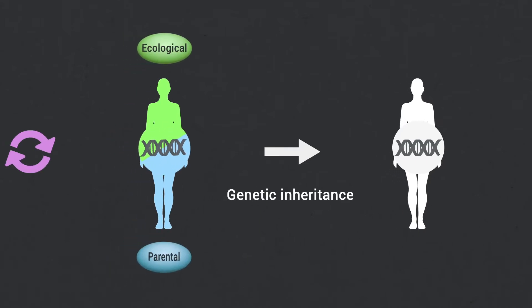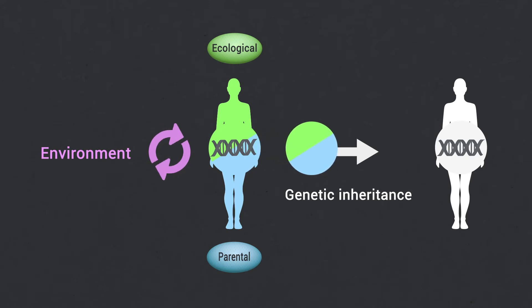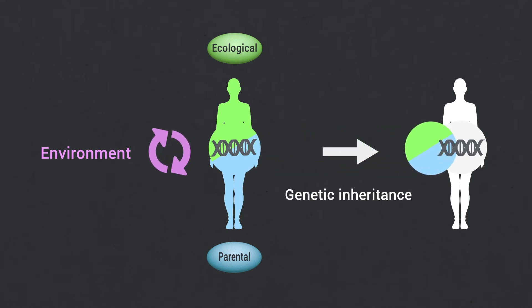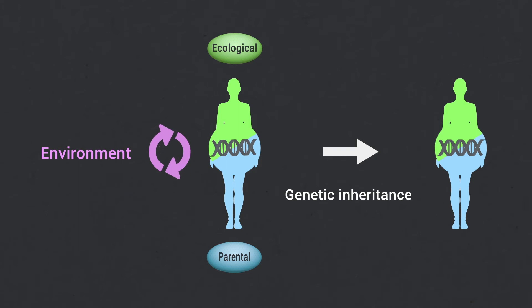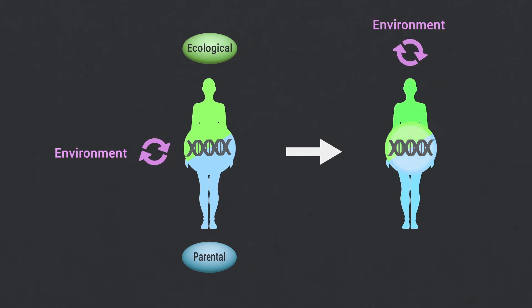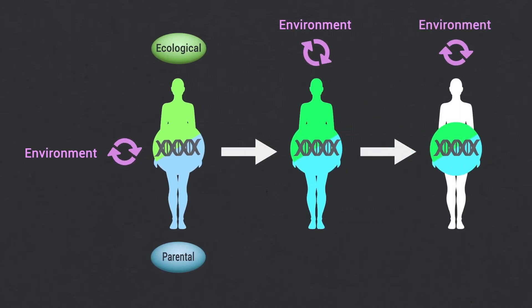In this view, parental or ecological inheritance, which appears as non-genetic at first glance, would be determined by the interplay between genes and environment. Therefore, one might still conclude that DNA sequence is the molecular substrate of natural selection.